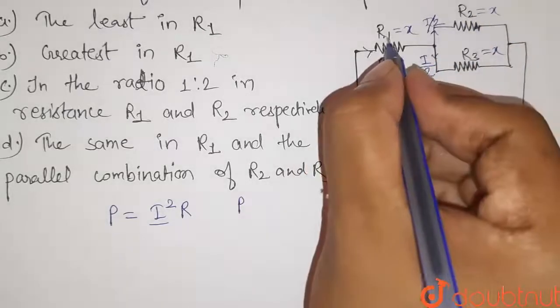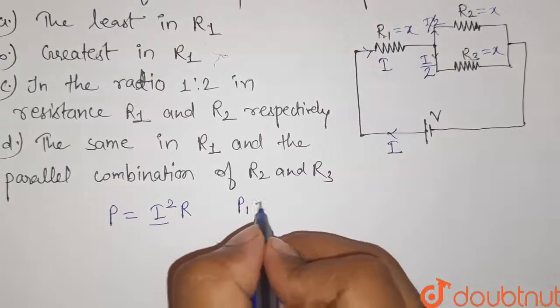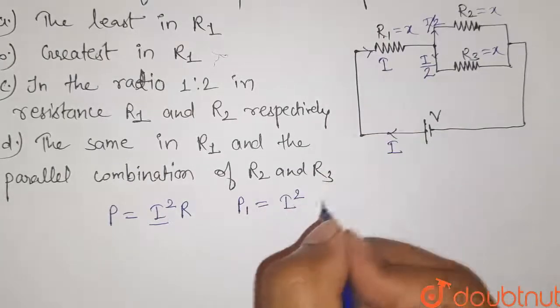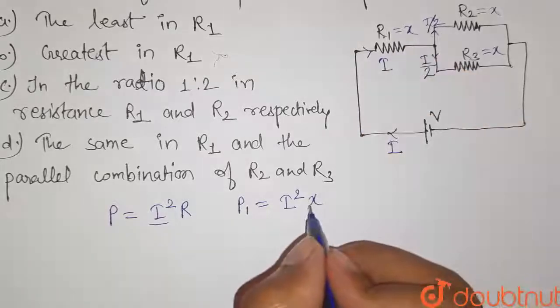So power in this R1 resistor will be equals to I squared into its resistance, we have supposed X. So this is the power for R1 resistor.